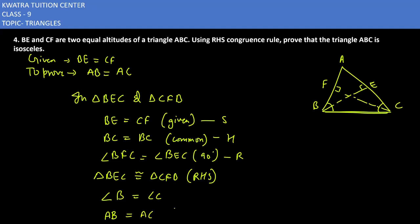So AB is equal to AC. Why? Sides opposite to equal angles are equal. So yes, my triangle ABC is an isosceles triangle. So this is your answer for the fourth one, now moving to the fifth question.